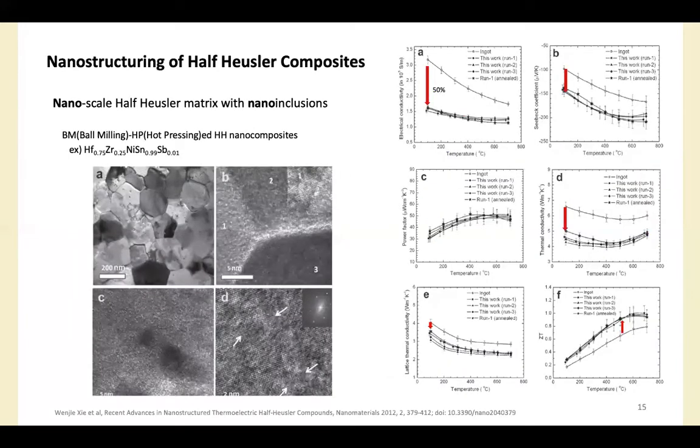Second example is nanoscale half-Heusler matrix with nano inclusions. The sample was prepared by ball milling and hot pressing. The small grains, precipitates, and lattice distortions are desirable for low thermal conductivity due to a possible increase in phonon scattering. In Figure C, some precipitates in the matrix are observed. And in Figure D shows discontinuous distorted crystal lattice.